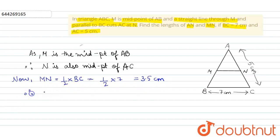AN is equal to half of AC. So half into 5, this equals 2.5 centimeters.